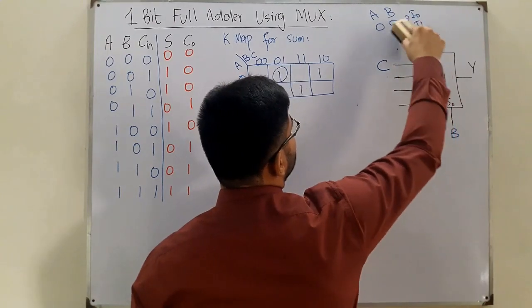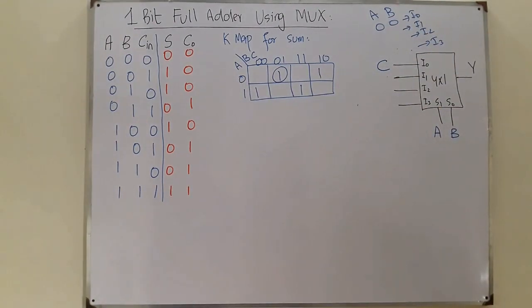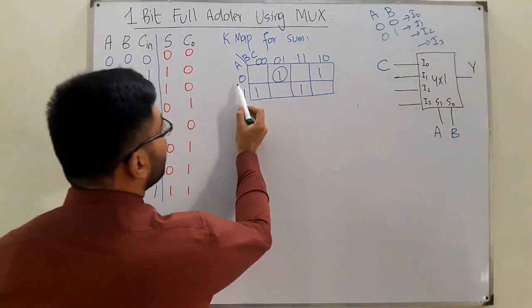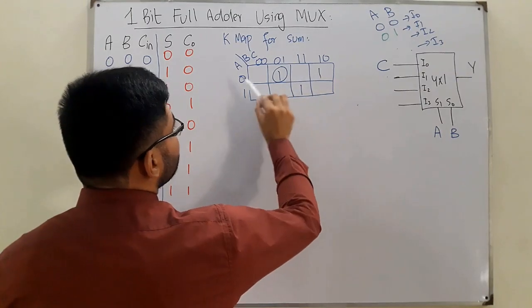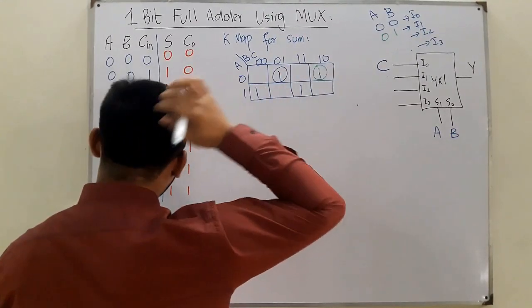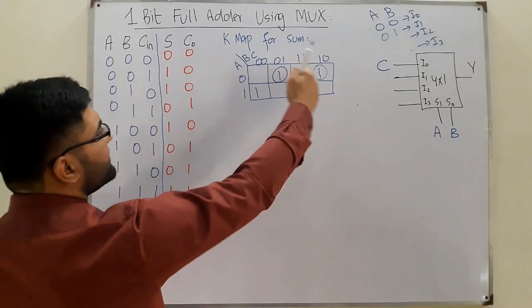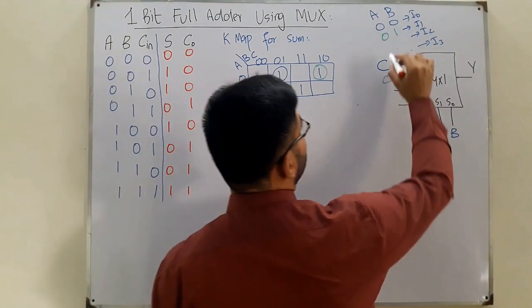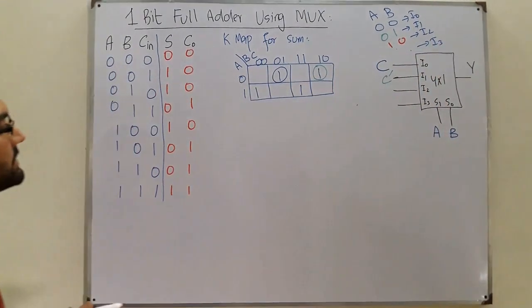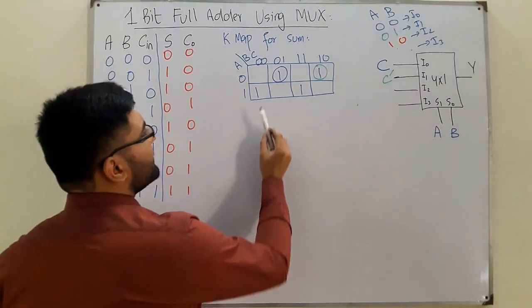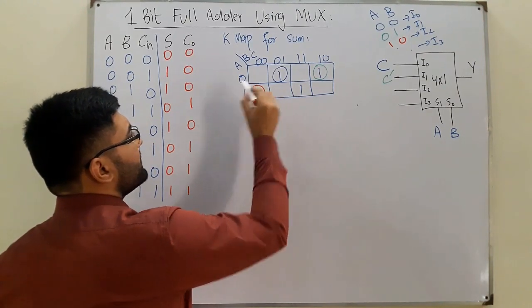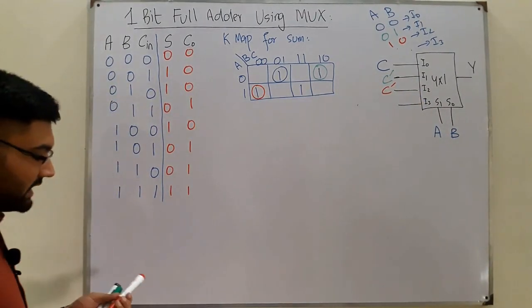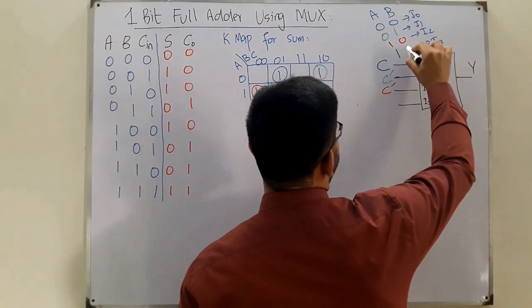For A=0, B=1 (I1), looking at those two blocks in the K-map: A and B are already in the select lines, so only C complement remains — I1 = C complement. For A=1, B=0 (I2), again looking at those two blocks, we get I2 = C complement.